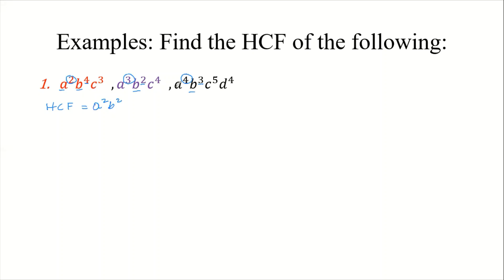We see c in all three terms and we are looking for the one with the lowest power. This one has a power of four, this one has five, and this one has three — so we need c³. There is nothing else common; d⁴ appears in only one term. Therefore, the HCF is equal to a²b²c³. That is how you obtain the highest common factor for those algebraic terms.